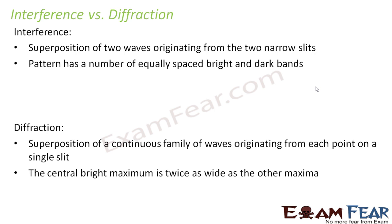For example, when we talked about interference we talked about two sources — two very small point sources that cannot be further split into smaller sources. But when we talk about diffraction, we consider one slit that is made up of n number of sources. We divide that slit into a huge number of parts and consider the contribution from each part, then sum it all up. So those small parts are each considered as individual sources.